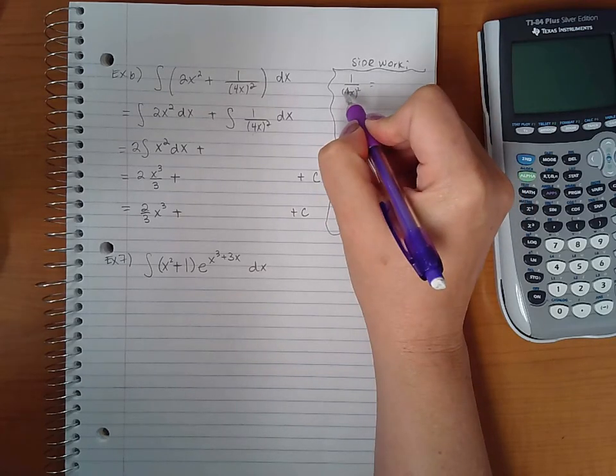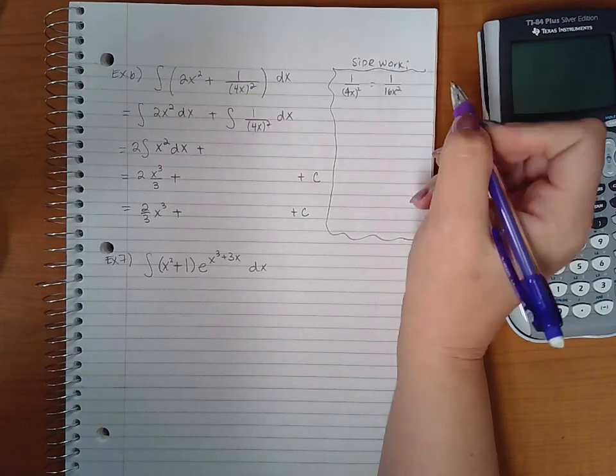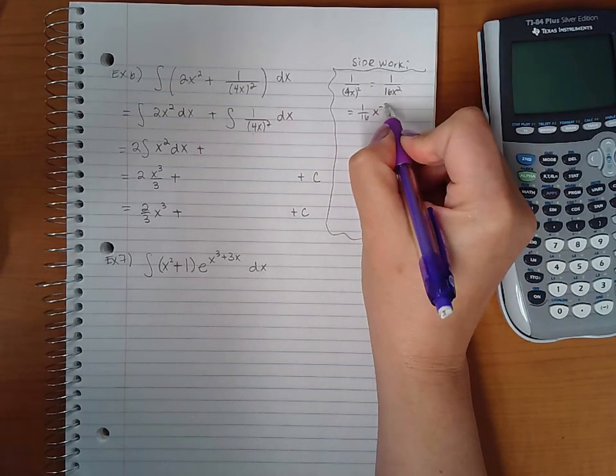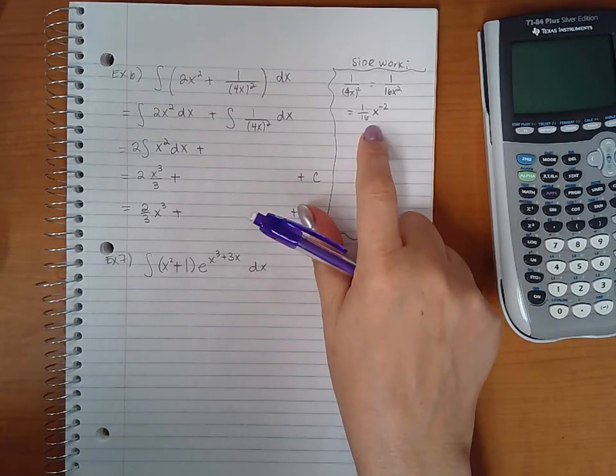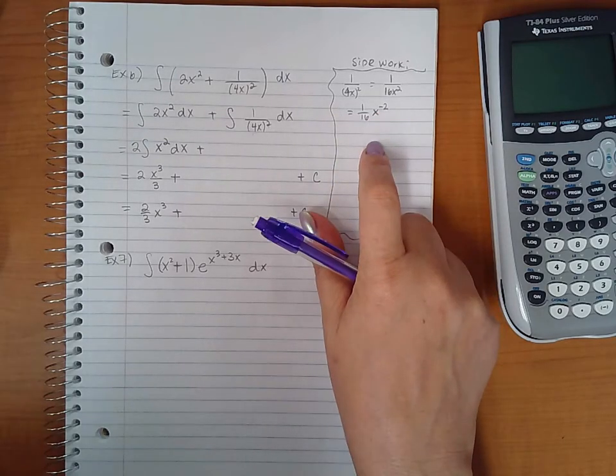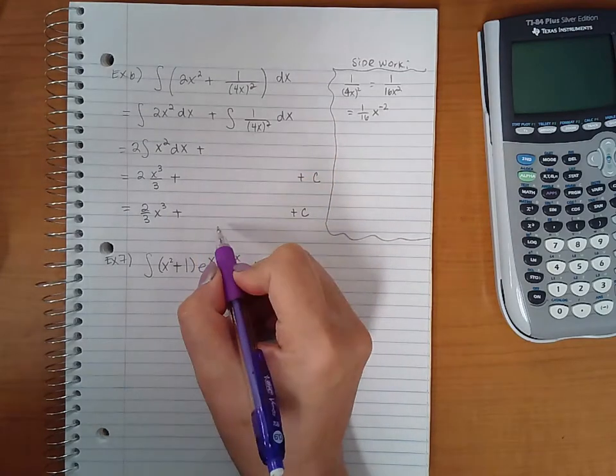If you notice the expression, if I actually square this expression I get one over sixteen x squared, which can be written as one over sixteen times x to the negative two. And I could apply the power rule to this, bringing this outside as a constant multiplier and then just simply writing the power rule.